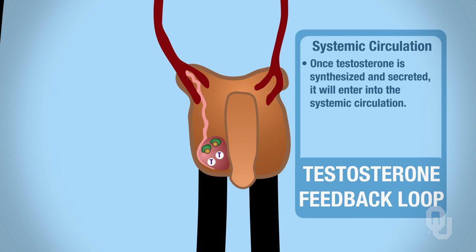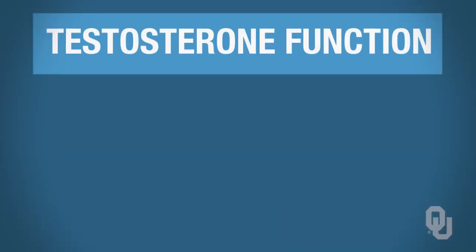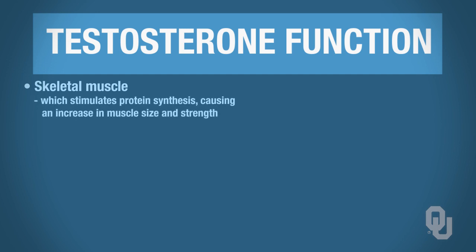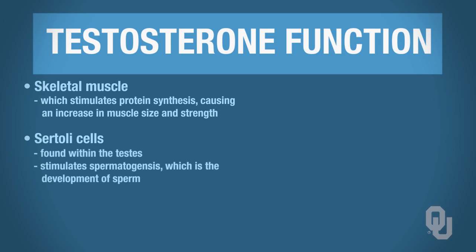Once testosterone is synthesized and secreted from the Leydig cells, it enters into the systemic circulation. Testosterone in the bloodstream can target a number of different cells. It can target skeletal muscle, and when it does, it stimulates protein synthesis, which leads to an increase in muscle size and strength. Testosterone will also target the Sertoli cells found within the testes, stimulating spermatogenesis — the development of sperm — so that males wind up with mature sperm for reproduction.